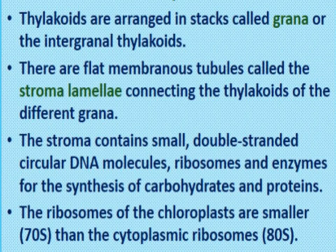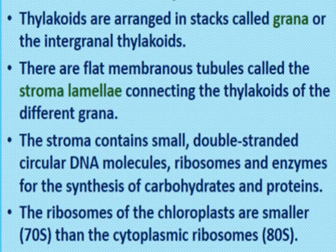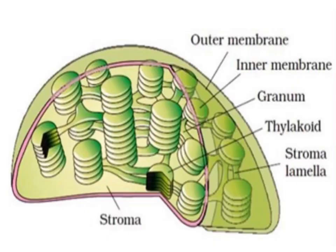The ribosomes of chloroplasts are smaller than cytoplasmic ribosomes. In eukaryotic cells, the cytoplasmic ribosome is 80S type, but inside the chloroplasts, 70S type ribosomes are present — just like in mitochondria. Looking at the diagram of chloroplasts: it is a double membrane structure with outer and inner membranes visible. Grana, thylakoids, and stromal lamellae can all be seen in the diagram.